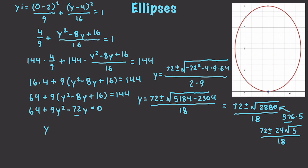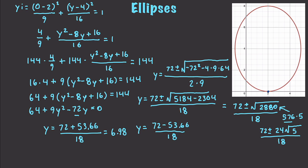The first y-intercept is y equals (72 plus 53.66) divided by 18, which gives approximately 6.98. The second y-intercept is y equals (72 minus 53.66) divided by 18, which gives approximately 1.02. These are approximate values, and looking at the graph, we can confirm that those are indeed correct. That is how we calculate both x and y intercepts for an ellipse.